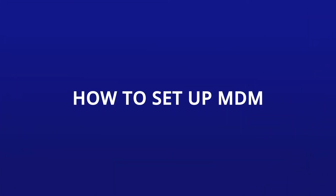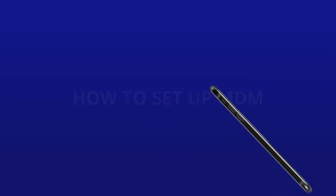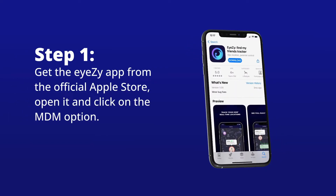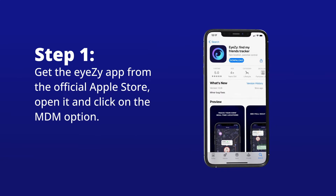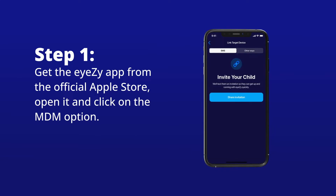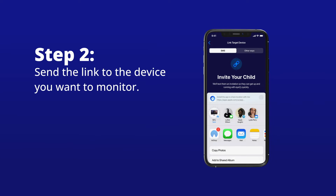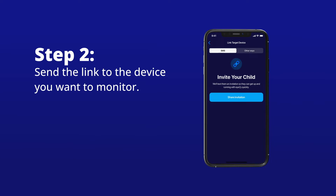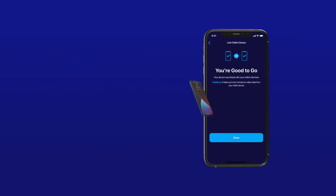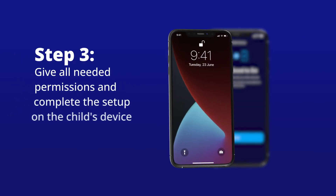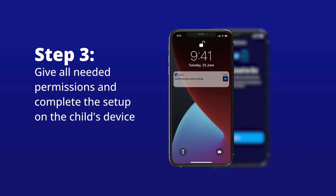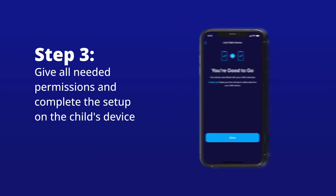To get set up and running with MDM, just follow three simple steps. Step 1: Get the iZ app from the official app store. Open it and click on the MDM option. Step 2: Send a link to the device you want to monitor. Step 3: Give all needed permissions and complete the setup on the child's device.